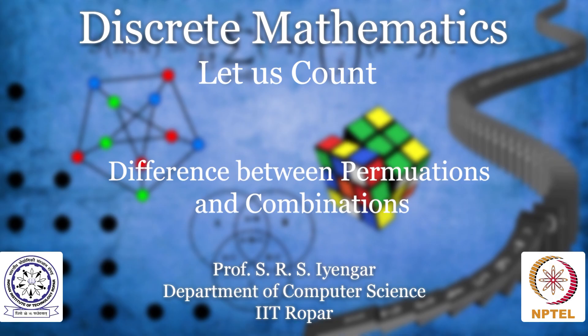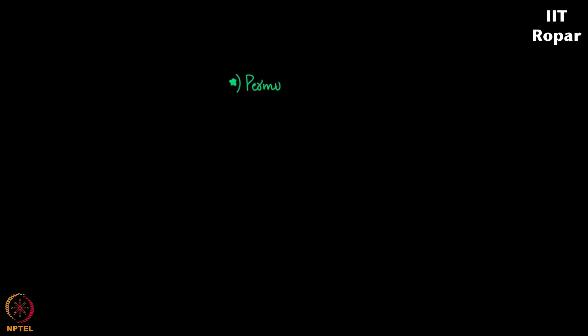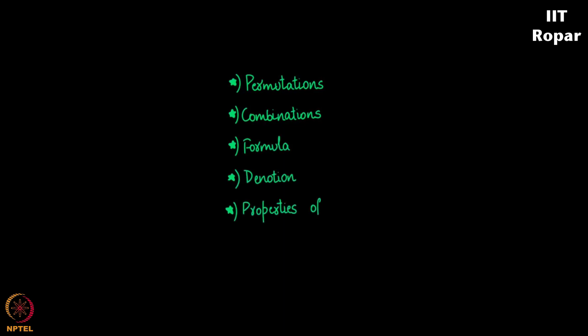So till now we have seen what permutations and combinations are, their respective formulas, how to denote them, the notations, several properties of combinations, and we have solved a lot of problems on both permutations as well as combinations.